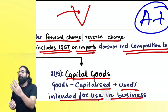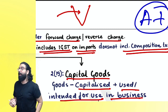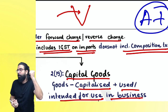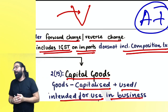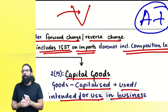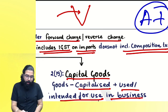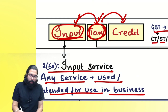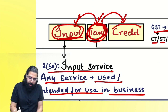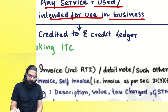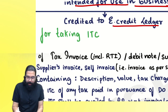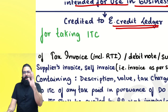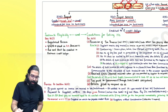IGST on imports — you will get the credit. But composition tax (1%, 5%, 6%) — you will not be able to take the credit; you will only get a bill of supply. Whatever GST you pay on inputs, input services, or capital goods comes into your e-credit ledger.